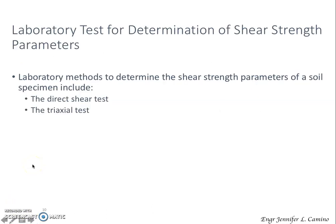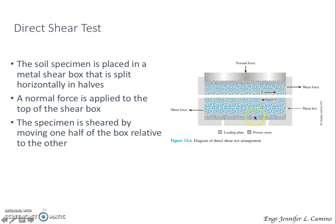Laboratory tests are used to determine the shear strength parameters. We determine them through two main tests: the direct shear test and the triaxial test. The direct shear test is the oldest and simplest form of shear test arrangement. The test equipment consists of a metal shear box in which the soil specimen is placed.